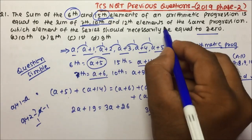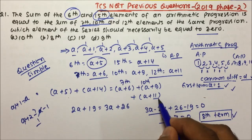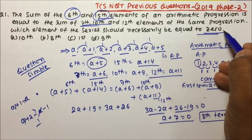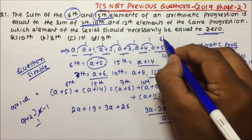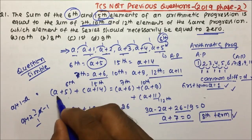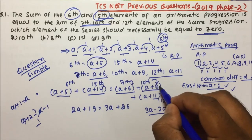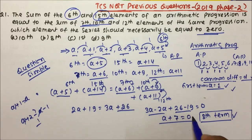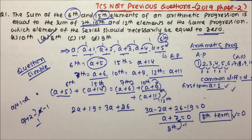They are telling us the 6th term plus the 15th term equals the sum of the 7th, 10th, and 12th. Adding: 2a+19 = 3a+26, which gives a+7 = 0 — that's the 8th term, since a+7 = a+(8−1). So the 8th term is equal to 0. Option B is the correct answer for question number 1.